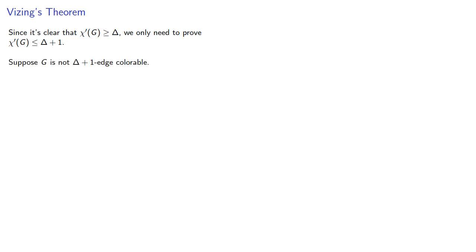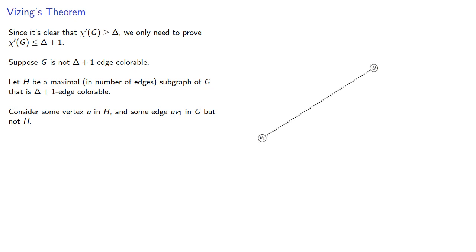So suppose we have a graph that's not delta plus one edge colorable. Let h be a maximal, in number of edges, subgraph of g that is delta plus one edge colorable. And consider some vertex u in h and some edge uv1 that's in our graph but not in our maximal subgraph. We'll represent that by drawing a dotted line between two vertices that are connected with an edge in g but not in h.